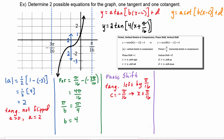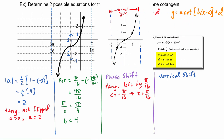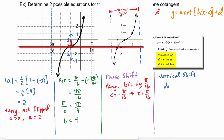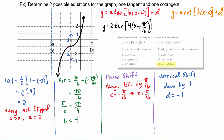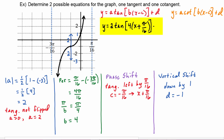Now we're ready to find the vertical shift. Comparing to the unaltered graph of tangent, the middle point of the five key values should be sitting on the x-axis, but instead it has moved down by one. That means d is going to equal negative one, so we write minus one. Here's the completed equation for the function if it's a tangent.